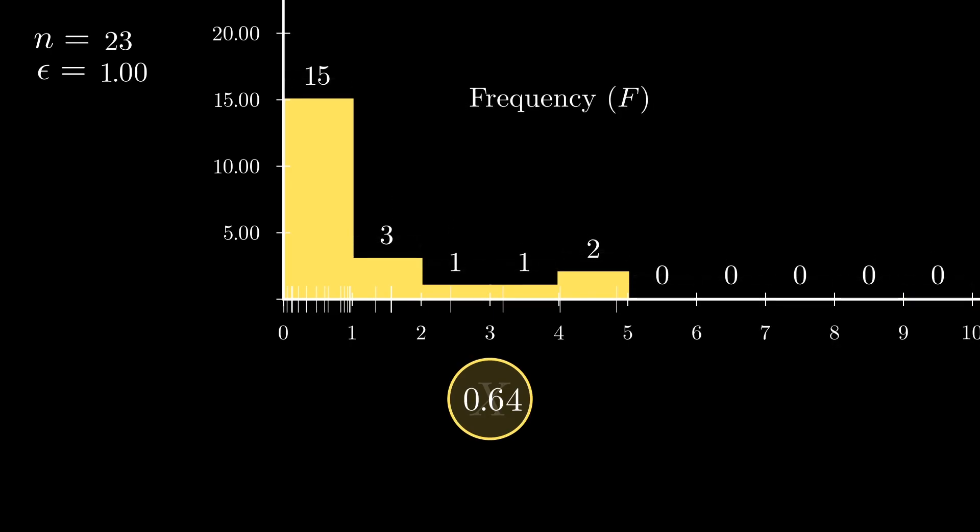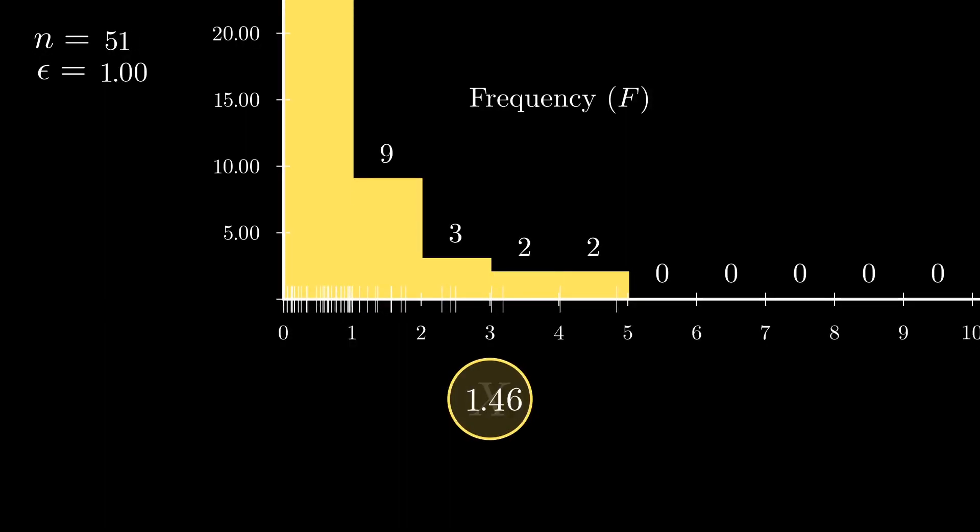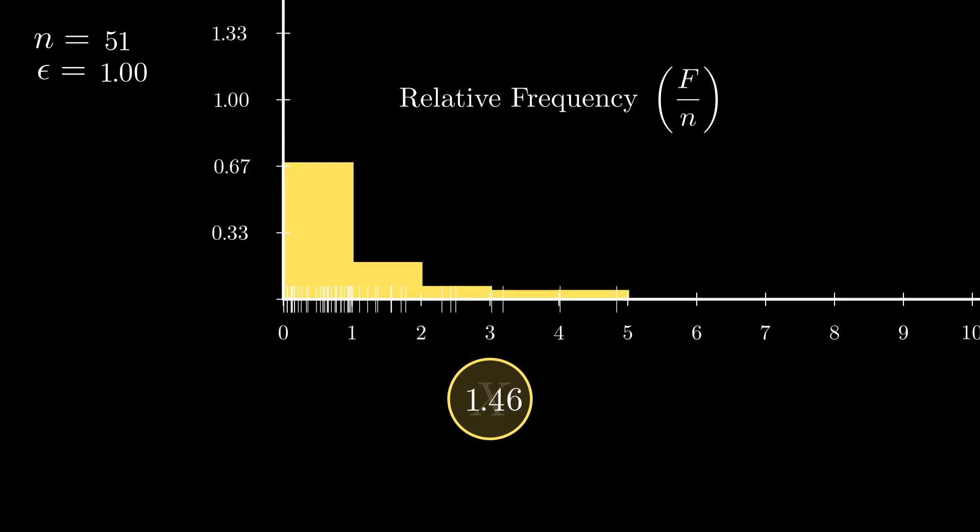As we let n grow more and more, you may see that this approach has an obvious problem, because we will end up with infinitely high rectangles. So instead of keeping track of the frequency, we could keep track of the relative frequency, which is simply the frequency divided by the total number of observations n. This means that we divide the height of each rectangle by the total number of observations that we have generated.